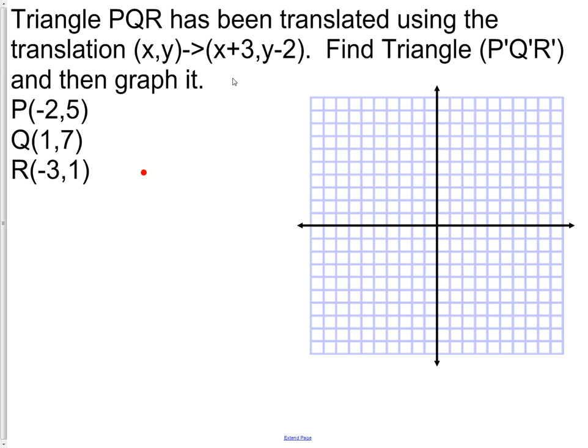Then graph it. First thing we need to do is put the original picture onto the graph, so we need a dot at (-2, 5). There's our dot for P. Then we have dot Q which is at (1,7) - one and then up seven.